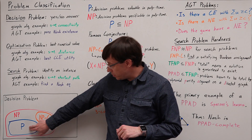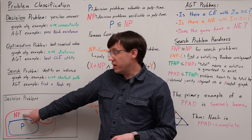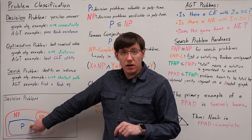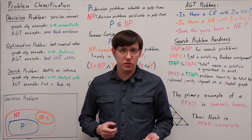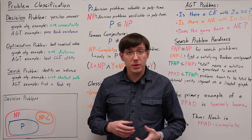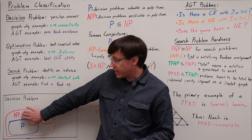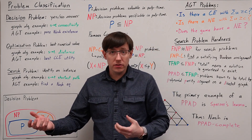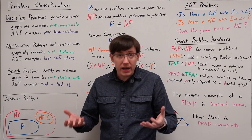You may have heard before of the classes P and NP, which stand respectively for polynomial and non-deterministic polynomial. P is the set of decision problems that can be solved by polynomial time algorithms, whereas NP is the set of decision problems that can be verified by polynomial time algorithms. When we talk about verification, we mean that if the answer to a particular instance is yes, it should be easy to prove that the answer is yes by something that can be checked in polynomial time.